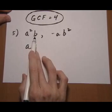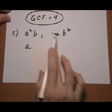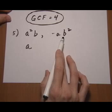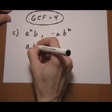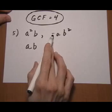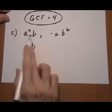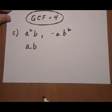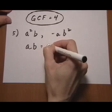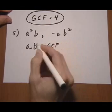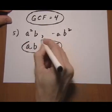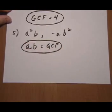The first expression here has one B. This one has two Bs. What do they have in common? They have one B in common. This one has a minus sign, this one is positive. They do not have a negative in common, so we're not going to put a negative. That means the GCF for this pair of expressions is AB.